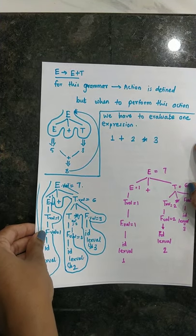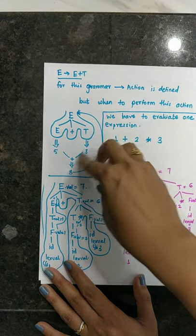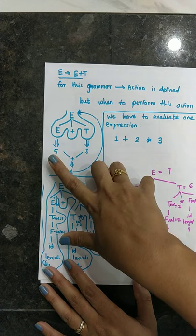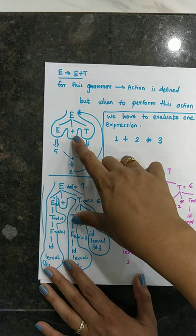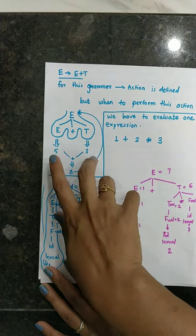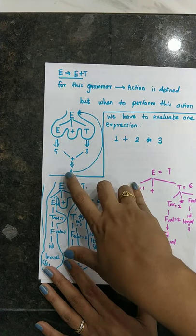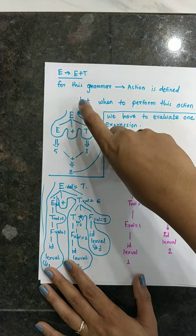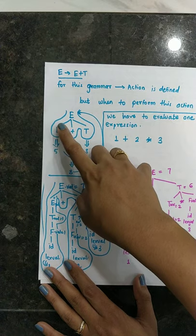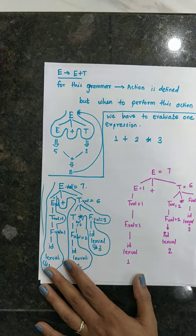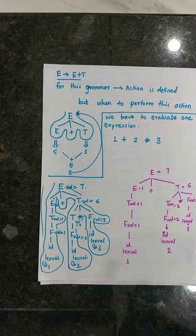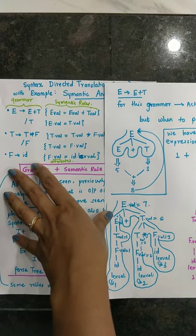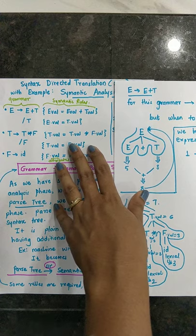The evaluation starts from the root node and goes left to right. As you traverse, you get the first non-terminal — for example, E with value five, then an operator, then T with value ten. You perform the addition of them. The result is written back to the root node, going from root down to further variable values and then returning to the root node. These actions are defined by the Syntax Directed Translation.